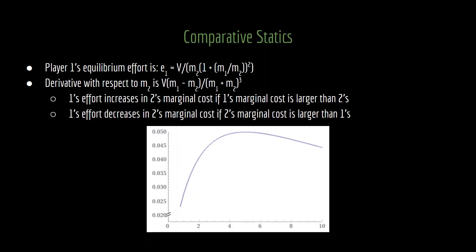We can see this in the figure here. We're holding fixed player one's marginal cost at five, and we're then varying what's happening with player two's marginal cost and actually plotting player one's equilibrium effort. So you can see it's increasing up until we hit five, and once player two's marginal cost exceeds five, then player one's equilibrium effort starts to decline.